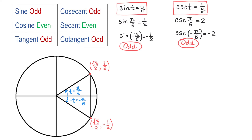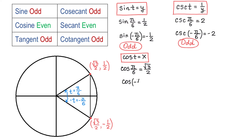Now let's talk about the cosine function. Cosine, by definition, is equal to x. Then cosine of pi over 6 equals square root of 3 over 2. If we replace t with negative pi over 6, we also get square root of 3 over 2. So when t was replaced with negative t, the value of the function did not change. This makes this function even.